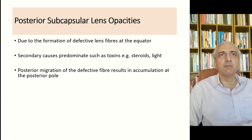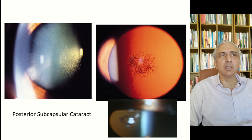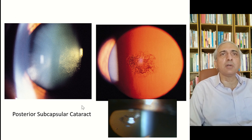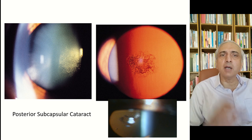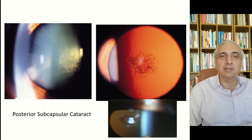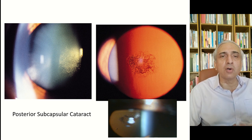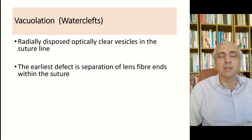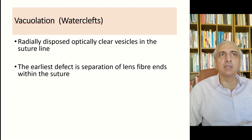Posterior subcapsular opacities are due to formation of defective lens fibers at the equator, predominantly caused by secondary causes such as toxins, steroids, and light. Posterior migration of lens fibers results in accumulation at the posterior pole. Steroid patients and high myopes — who may have reduced nutrition near the posterior subcapsular area due to longer axial length — tend to develop opacities in the posterior subcapsular region.